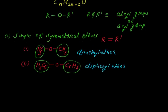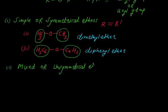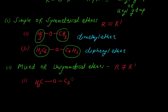Another type of ether is mixed or unsymmetrical ethers. In this particular type, R is not equal to R'. For example, we have CH3-O-C2H5.